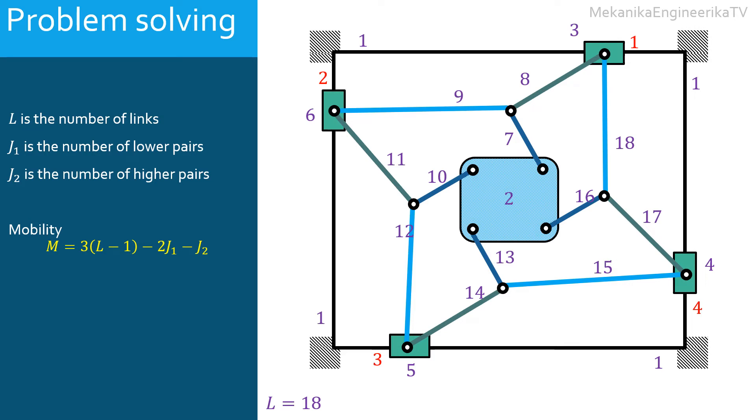Some are simple, connecting 2 links each. And some are of second order, connecting 3 links each, and thus they should be counted twice each.